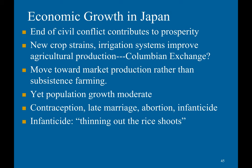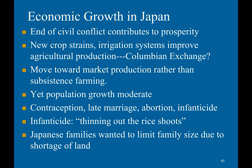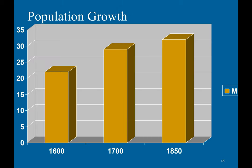Infanticide was also known as 'thinning out the rice shoots.' Japanese families limited family size due to shortage of land, since only a very small portion of Japan's land is actually arable. We see rather modest population growth in Japan — in 1600, standing at nearly 22.5 million, increasing to just under 30 million 100 years later, and then just a little over 30 million by 1850. So not really that much change.